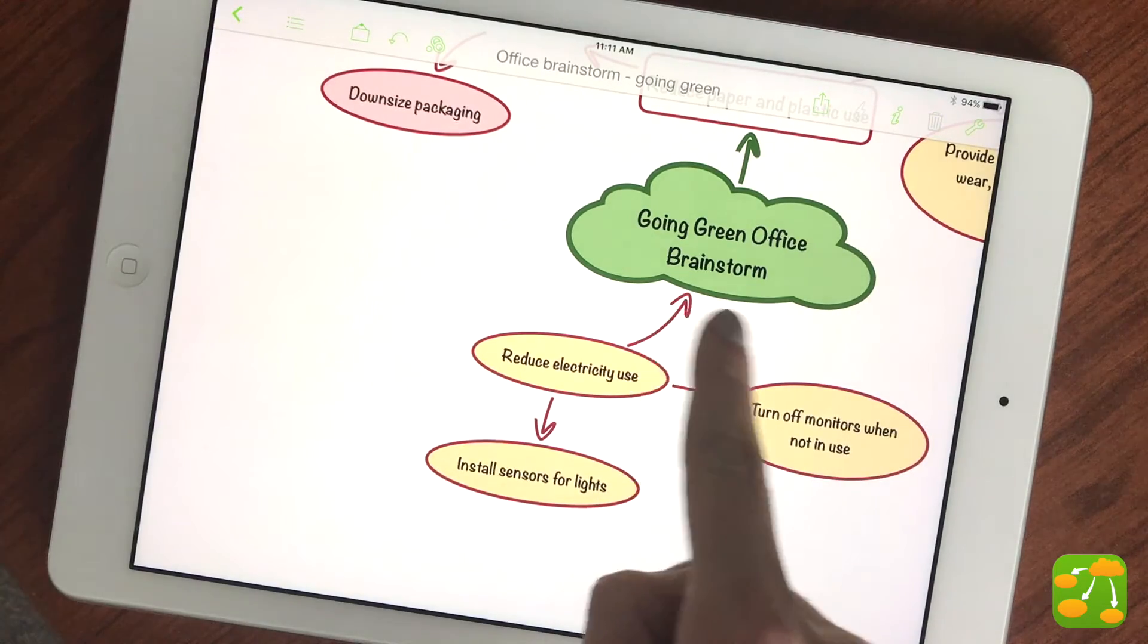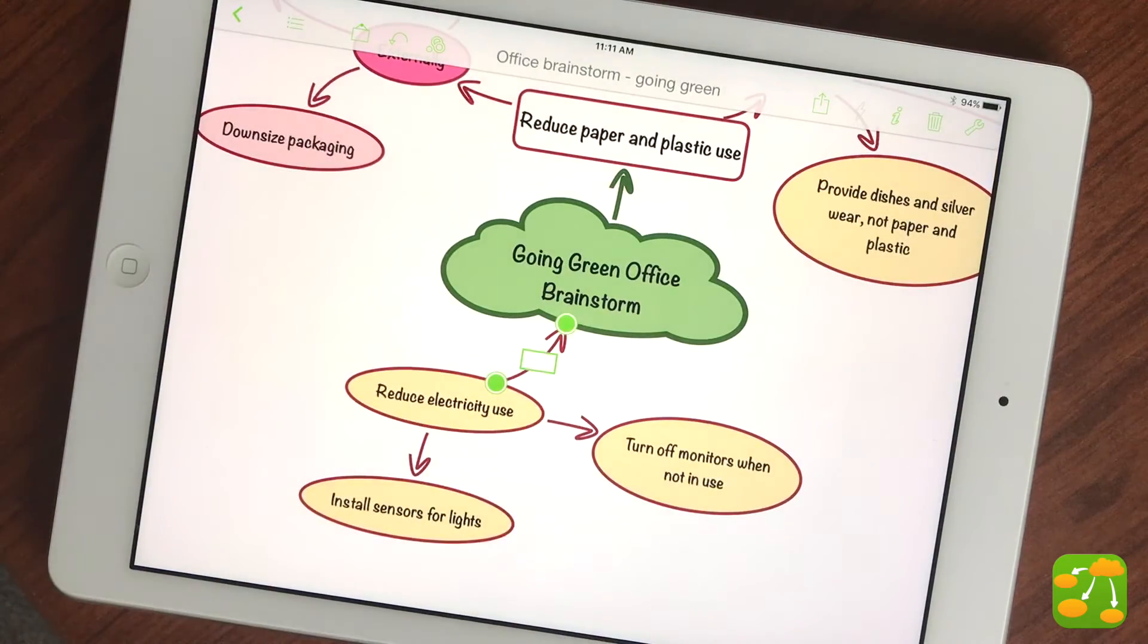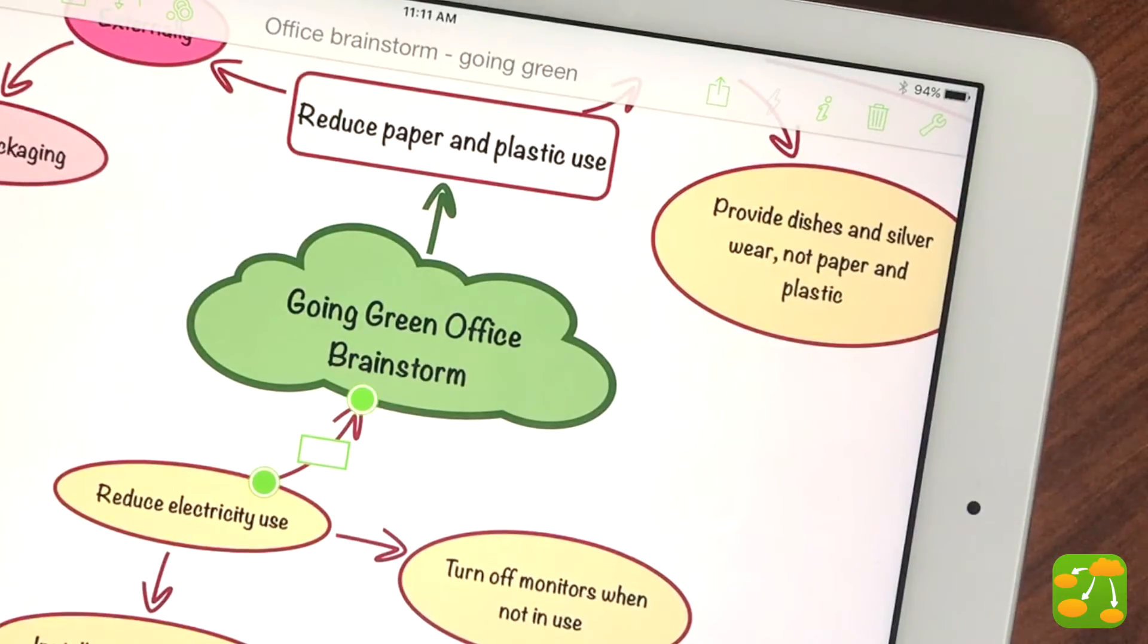You delete a link arrow the same way you would delete an idea symbol, by first selecting it, then tapping the trash can.